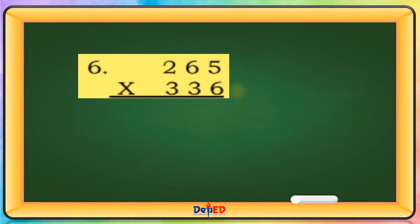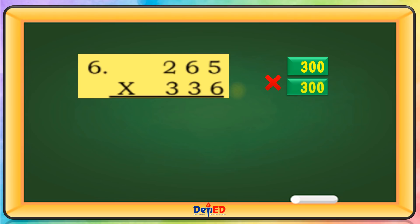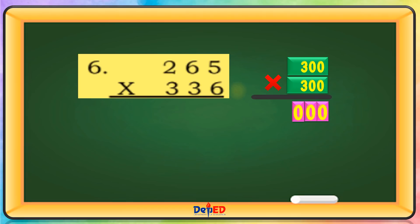265 will be rounded off to 300. 336 will be rounded off to 300. 300 times 300 equals — let's copy the four zeros. And then multiply 3 times 3 equals 9. The estimated product is 90,000.